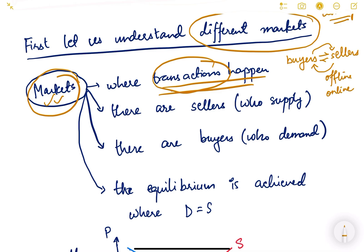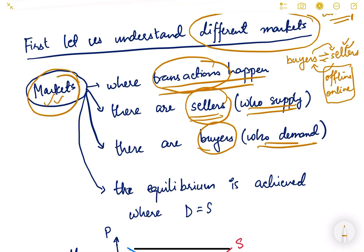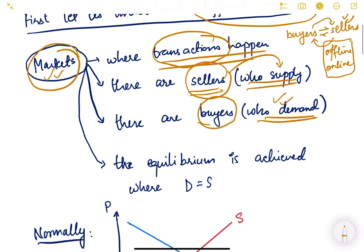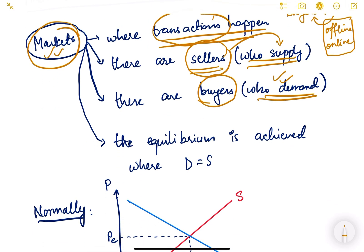In a market there are sellers who supply commodities, goods, or services, and there are buyers who demand them. Buyers demand the commodity and sellers supply it. Wherever the total demand in the market equals the total supply, we achieve equilibrium — this is known as market equilibrium.